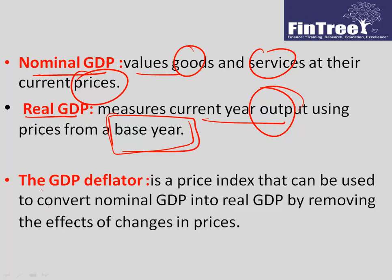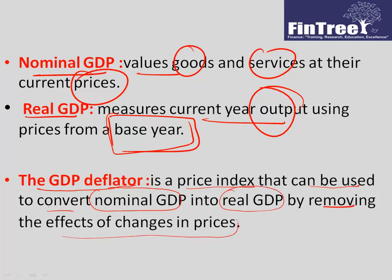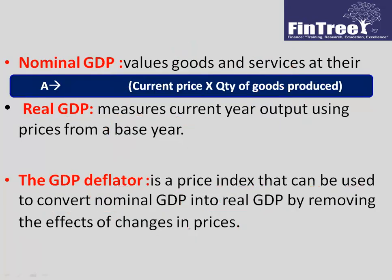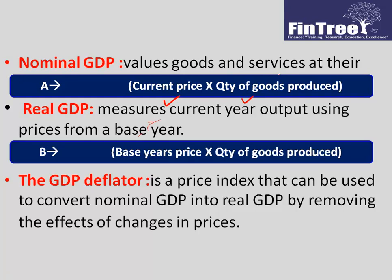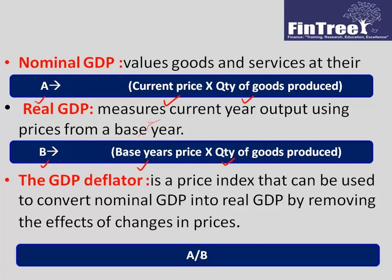The GDP deflator is a price index used to convert a nominal GDP into a real GDP by removing the effects of changes in prices. Nominal GDP is calculated as current price multiplied by quantity of goods produced. Real GDP is calculated as base year's price multiplied by quantity of goods produced. The GDP deflator is simply nominal GDP divided by real GDP — that is, A divided by B.